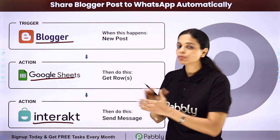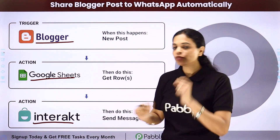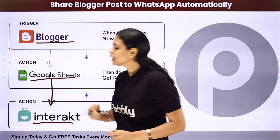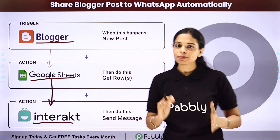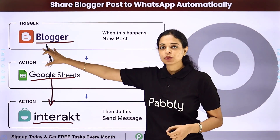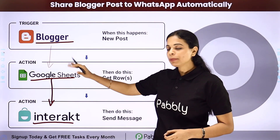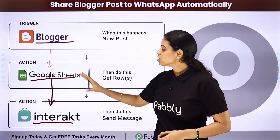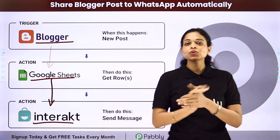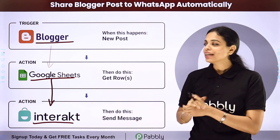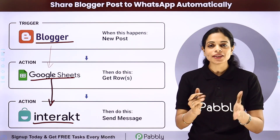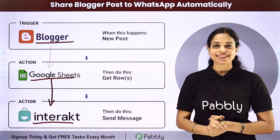Now how can this automation be done? You will have to integrate three applications, and the same thing can be done using Pabbly Connect software. Here your trigger application would be Google Blogger, and your action applications would be Google Sheets and Interakt. Now to understand how you can integrate and automate this entire process yourself, let me take you to my screen.